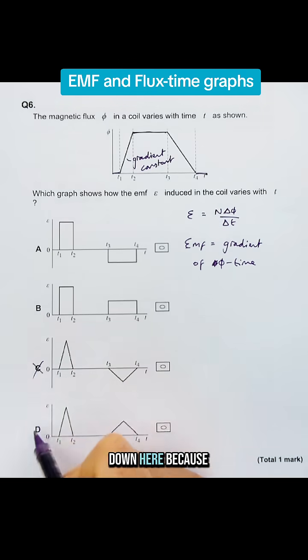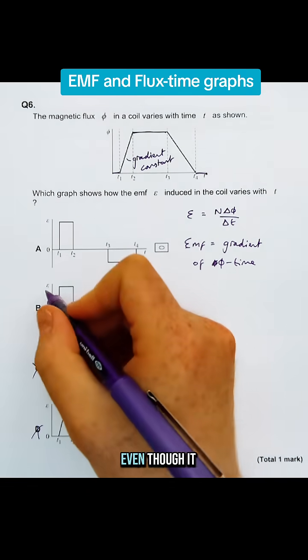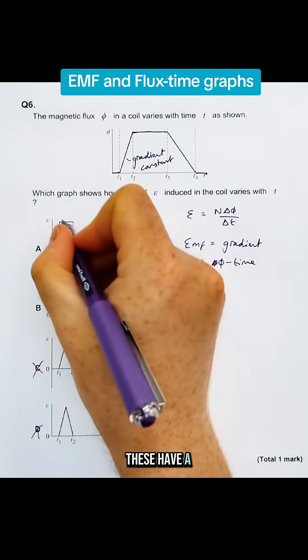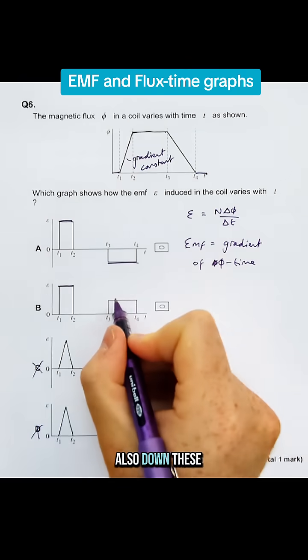So it can't be these two down here because they haven't got a constant EMF. The EMF is changing, it's gradually increasing. Even though it happens very suddenly, these have a constant EMF at that point and also down these points here.